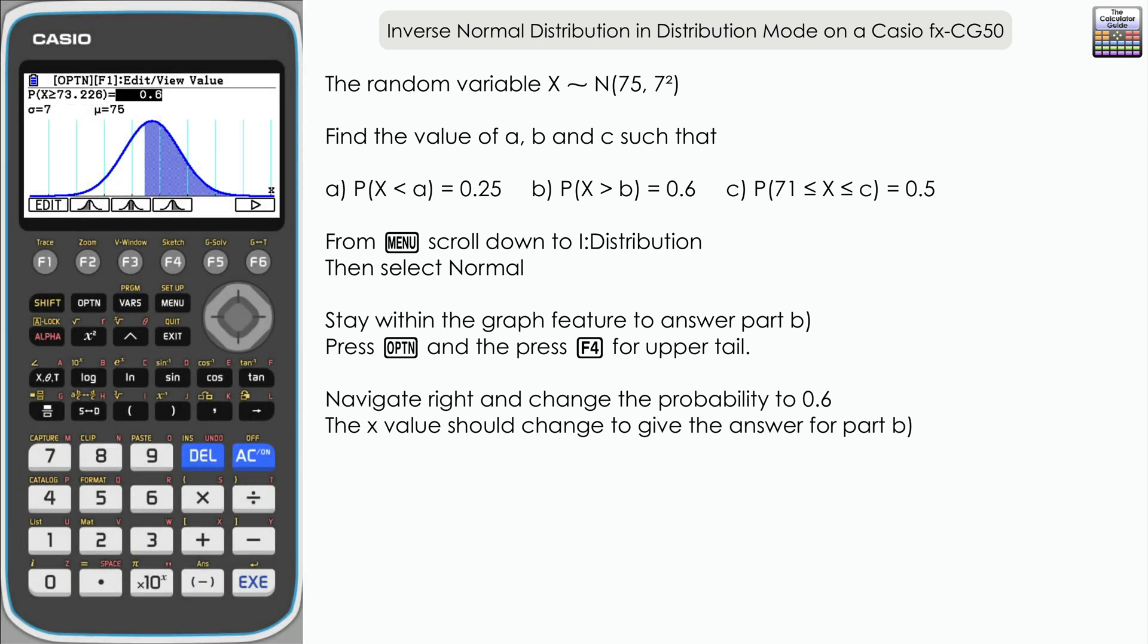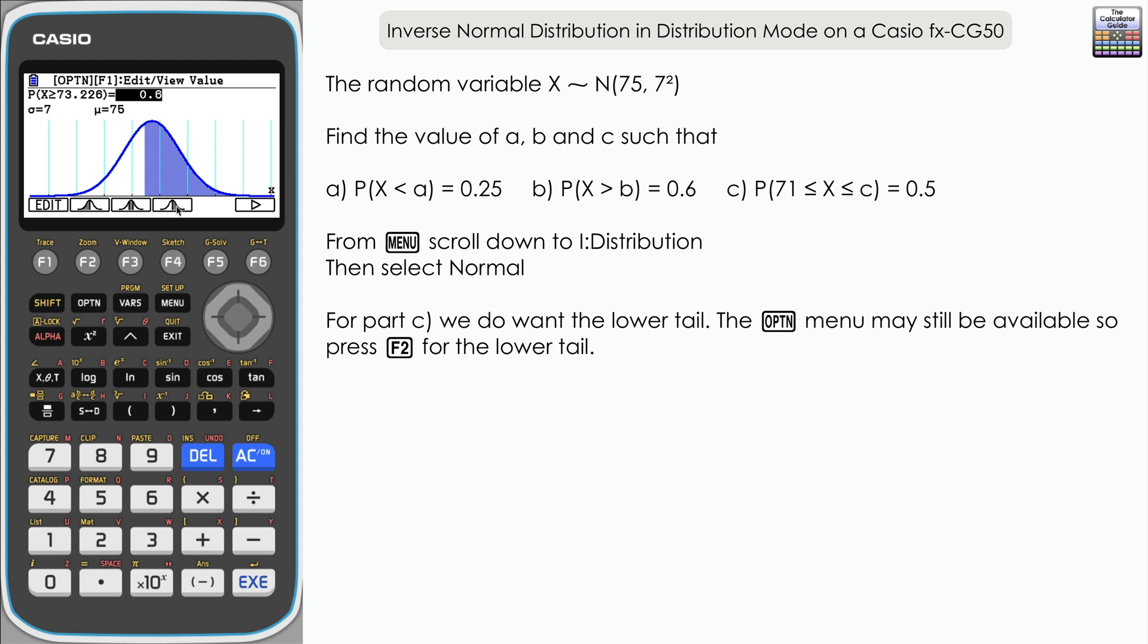Finally, for part C, we need to approach this in a slightly different way. We do want the lower tail again, so let's press F2, as we still have the options up here, to switch back to lower tail. Now let's put the lower bound of the values that we have for X in there, so 71.